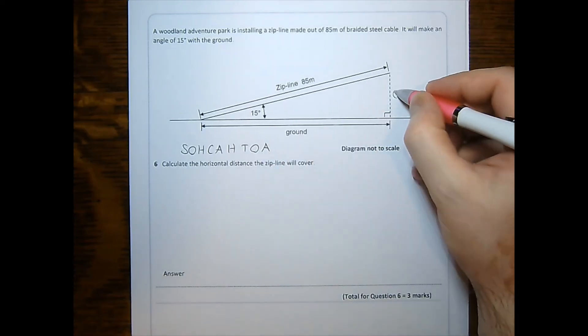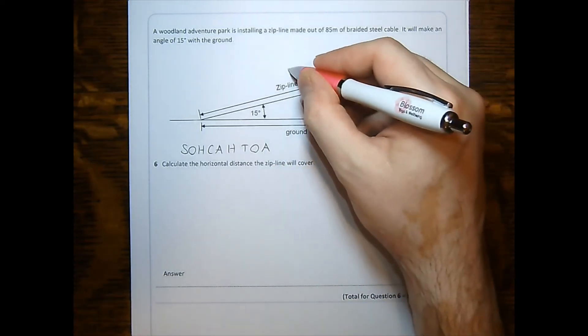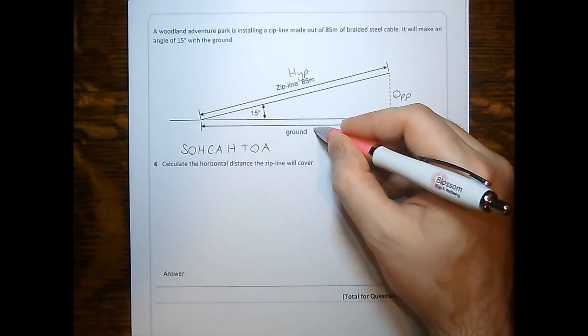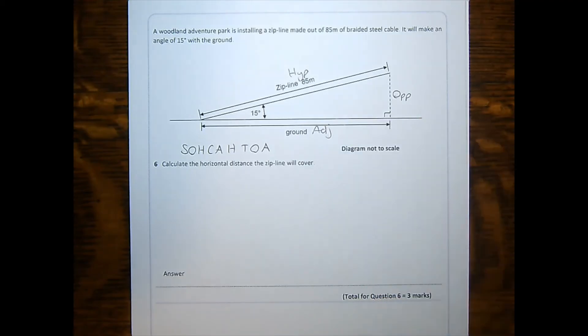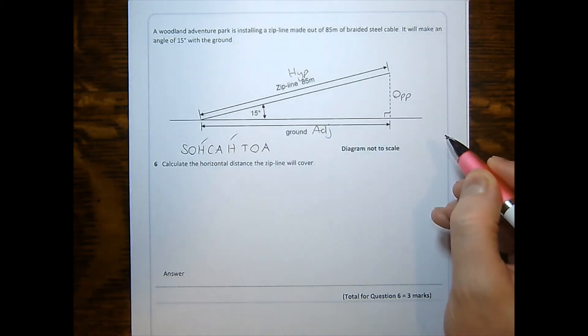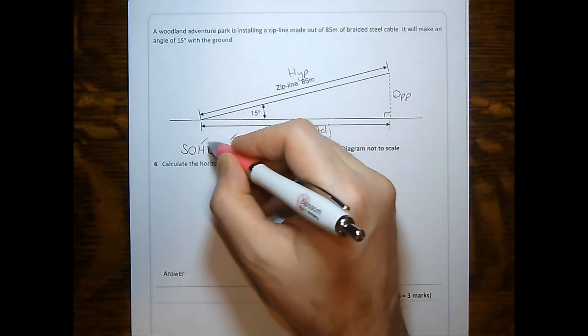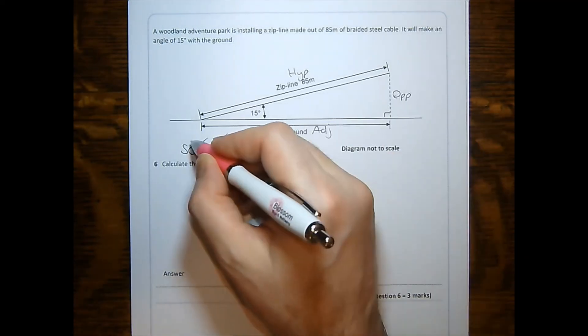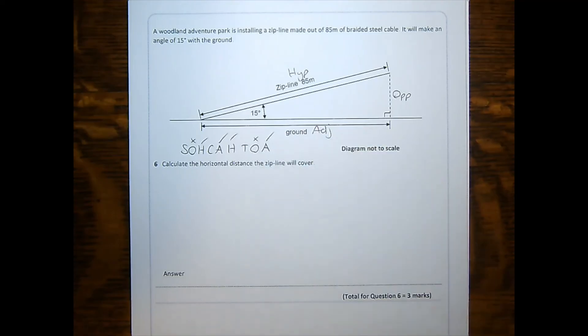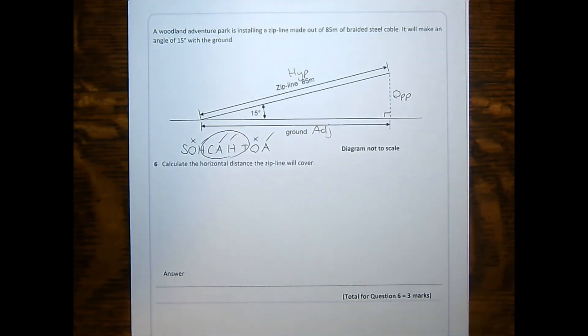Here is our angle, this is our opposite. Here's the hypotenuse, and this is the adjacent. We've got the hypotenuse and we're asked about the adjacent. We do not have or care about the opposite. Therefore, we're looking at cosine.